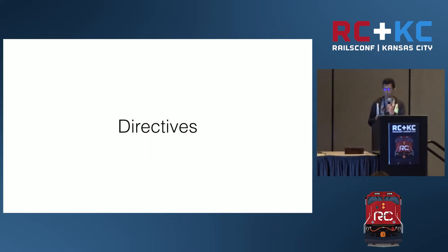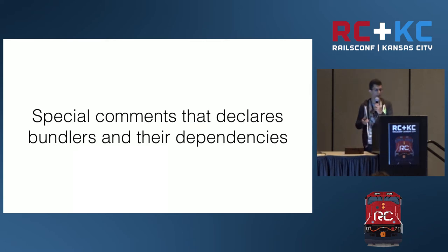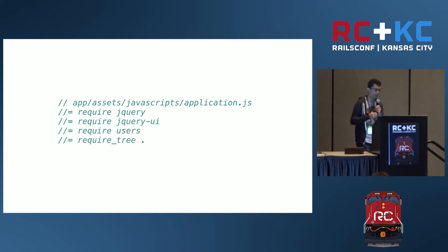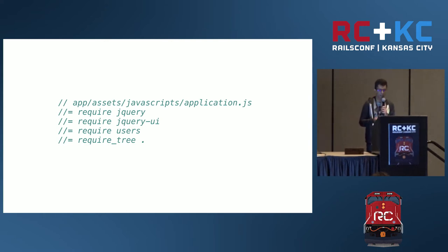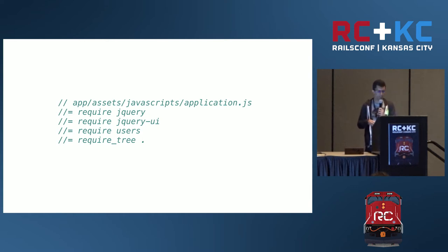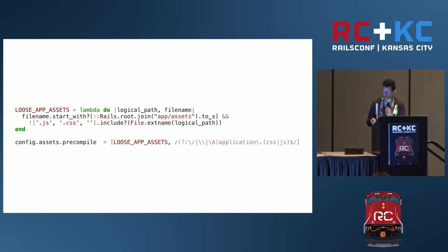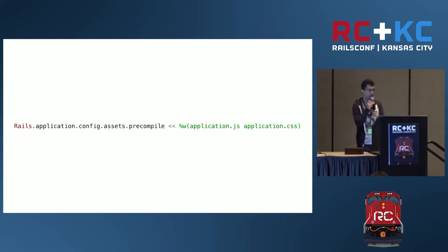Sprockets also has directives. I'm sure you've all seen these before — they are special comments that declare your bundles and dependencies. For instance, this is an example of the application.js generated by a new Rails application. It's telling us that to generate this application.js file, we have to require these three files, and also all the files inside the same directory as application.js.